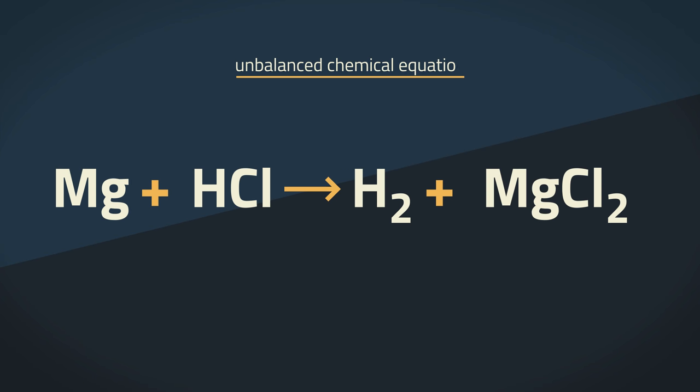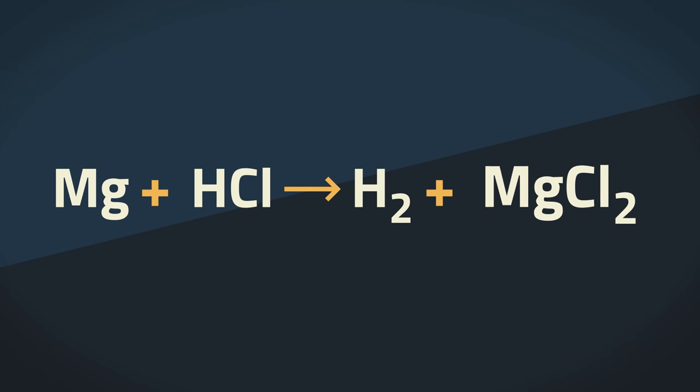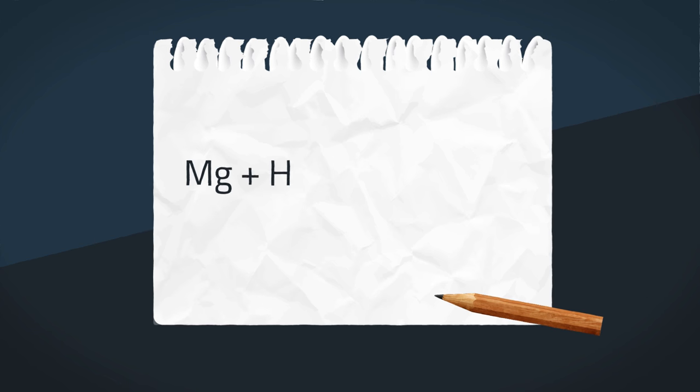The unbalanced equation for this reaction looks like this. In another lesson on this channel, we learned about balancing chemical equations. Can you try balancing this equation yourself? Grab a pencil and a piece of paper, pause the lesson and resume when you are ready.